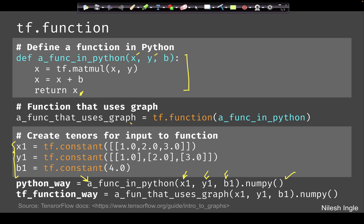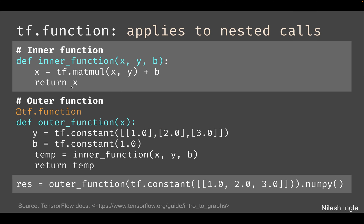An alternative way is to create a graph. To do that, we take this function and pass it to tf.function, which creates a graph stored in a variable. When we want to perform a calculation within this function, we submit the inputs — x1, y1, and b1 — to this graph. That's the basic usage of tf.function.